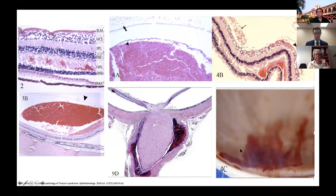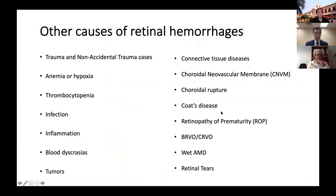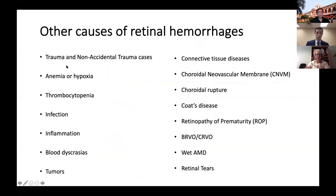Other causes of retinal hemorrhages include trauma and non-accidental trauma, anaemia, thrombocytopenia, infection, inflammation, blood dyscrasias like leukemias, Fanconi anaemia, Diamond-Blackfan syndrome. Other causes include tumours, connective tissue diseases, Coats disease, ROP, VR, BRVO and CRVO — getting back to the blood and thunder — and wet AMD causing neovascularization. Retinal tears can also cause retinal hemorrhages, especially if they tear through a vessel.